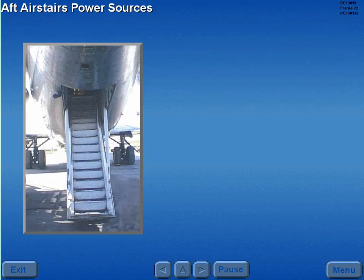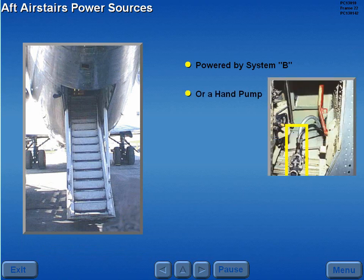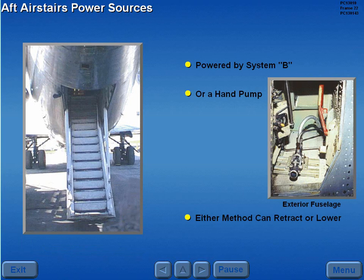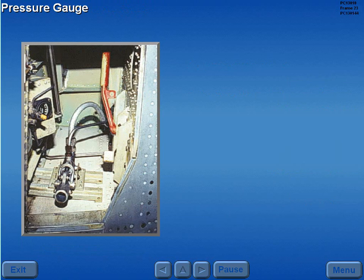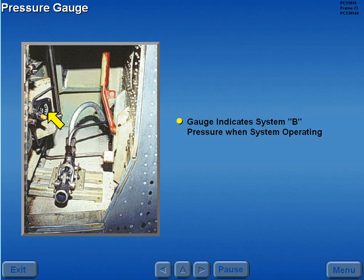The aft air stairs are normally powered by hydraulic system B, or alternatively by a manual hand pump. Either method can retract or lower the air stair. A pressure gauge indicates air stairs system pressure when hydraulic system B is pressurized.